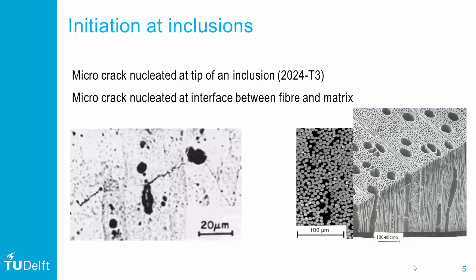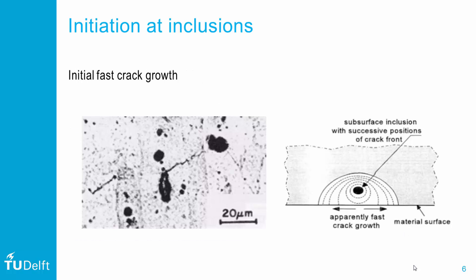If such a microcrack nucleates below the surface, its growth when observed at the surface appears initially fast; however, this growth merely consists of breaking the ligament between the microcrack and the surface.